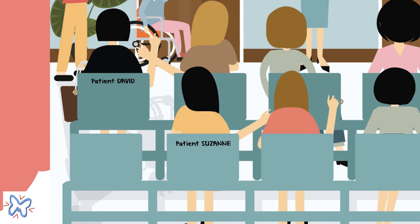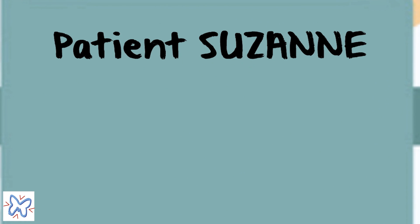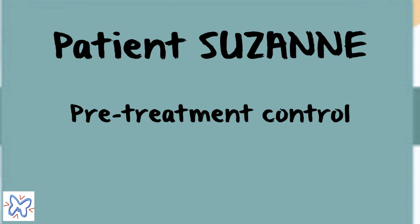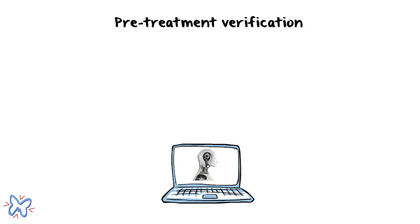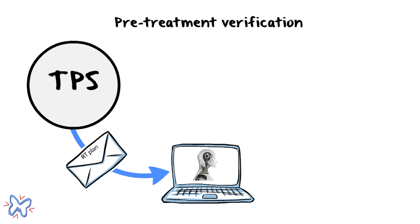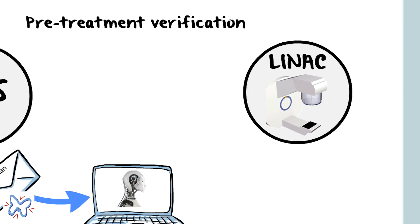Now, let us take two examples. What happens during the pre-treatment check of Cezanne's RT plan? Each time a new RT plan is generated from the TPS, a new control plan is created in ThinkQA database.